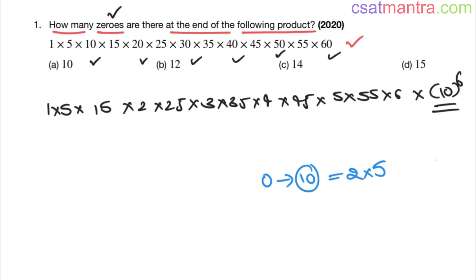Some tens are directly visible and we have separated them. Some tens are hidden and we have to find those out. To have a 10, we need a pair of 2 and 5. If we have a pair of 2 and 5, we can form 10, which means there will be a zero at the end. So let's look for 2s and 5s in this product.